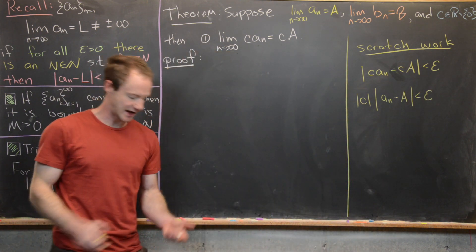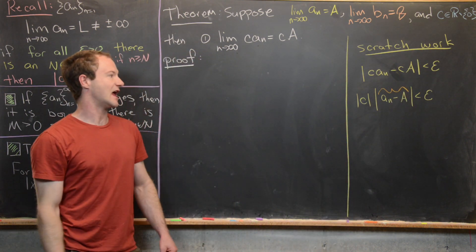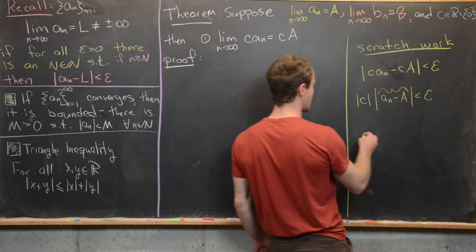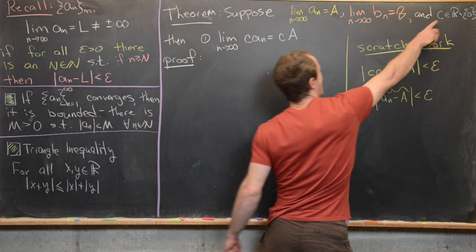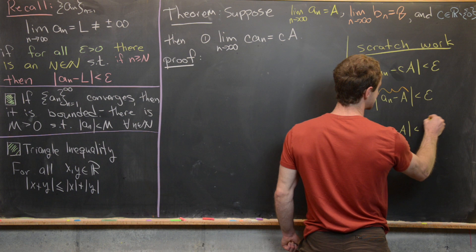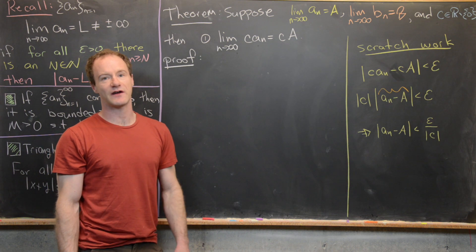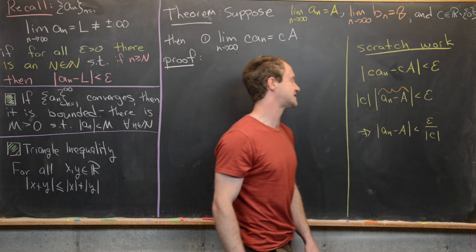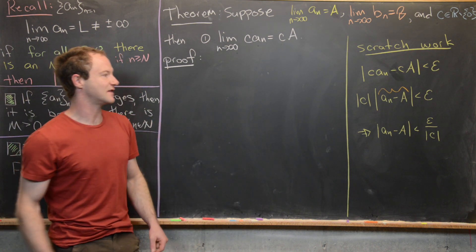We have control over |aₙ − a| because the sequence converges. Dividing both sides by |c| — which is nonzero by assumption — gives |a sub n − a| < epsilon / |c|. So if we choose our capital N so that the left-hand side is smaller than epsilon over |c|, that achieves our goal inequality.